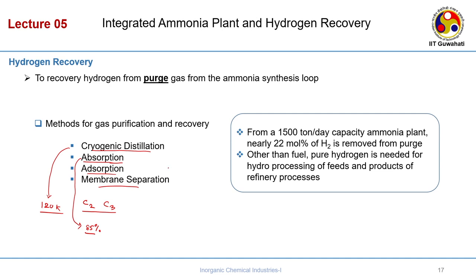That leaves adsorption and membrane separation. In adsorption, you take an adsorbent material. The key is how selectively it binds the other components compared to hydrogen. If you adsorb only the other components and leave the hydrogen, you get pure hydrogen. The adsorbent is chosen such that it adsorbs all impure gases except hydrogen, so hydrogen is obtained as the top product and the tail gas at the bottom.